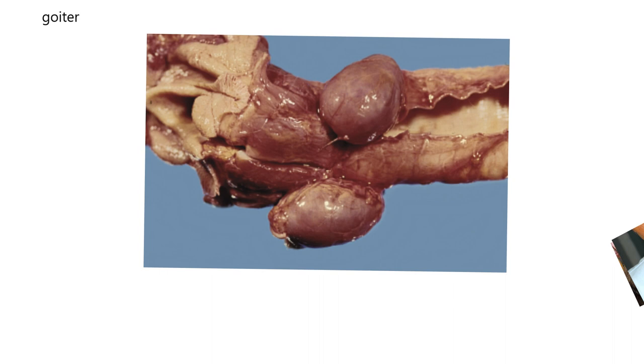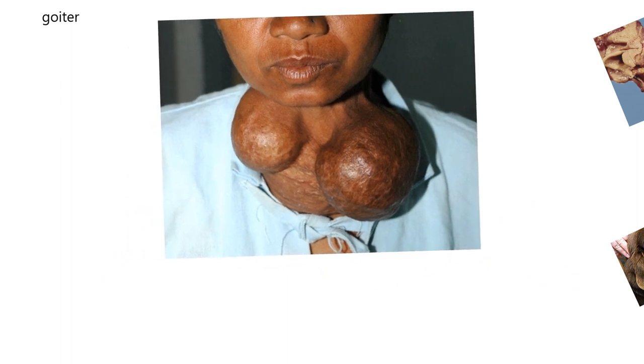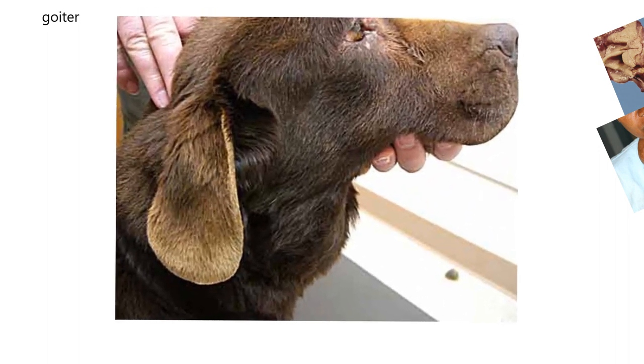Here we have a person with goiter. In some countries of the world, iodine is very lacking, and in this case the thyroid glands have enlarged. The isthmus present in humans isn't very apparent here, but it's an enlarged thyroid gland, probably due to deficient iodine. And then we have a dog that also has goiter.